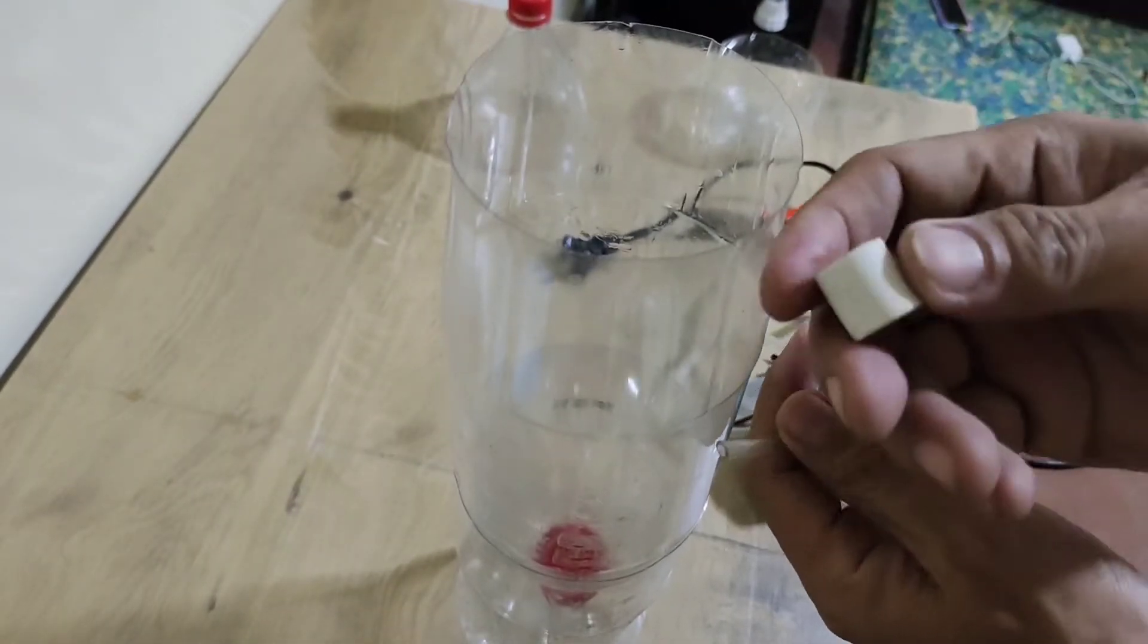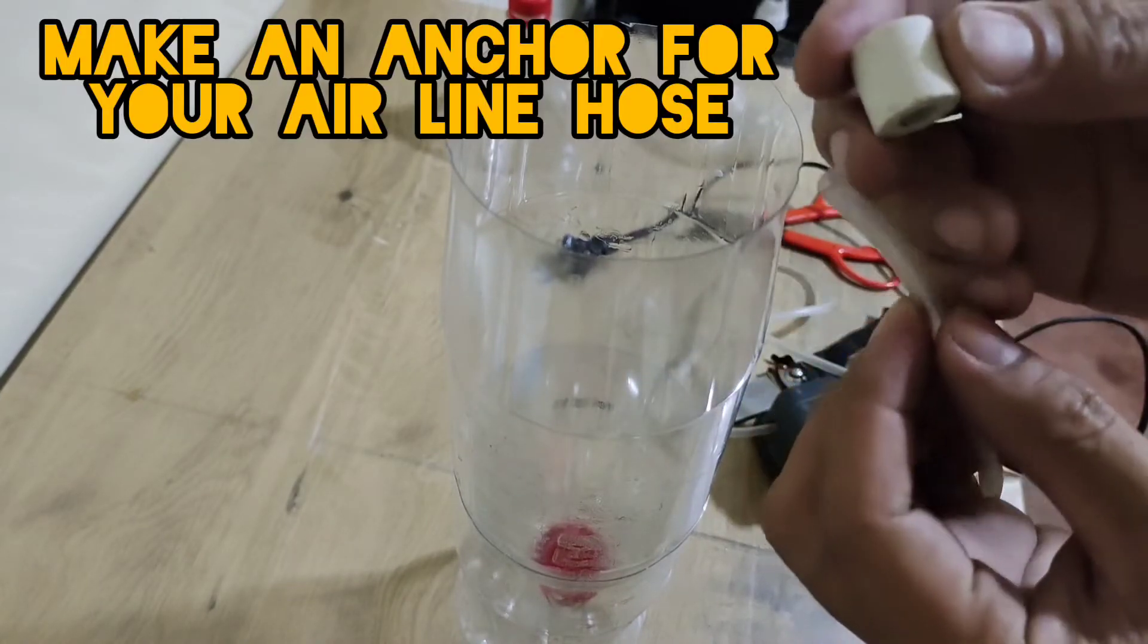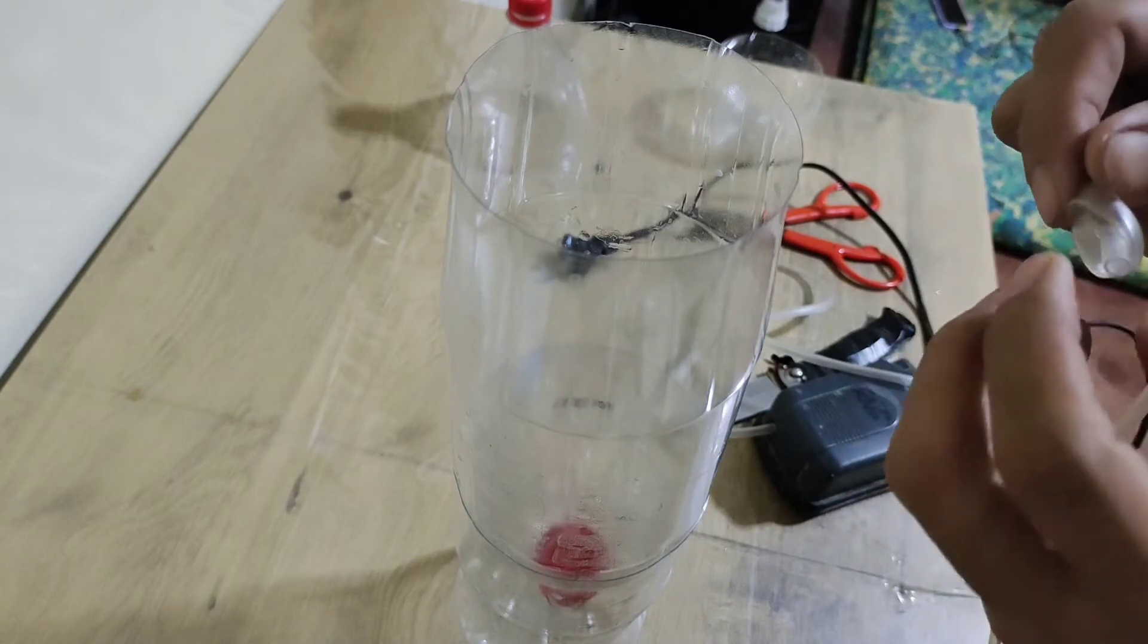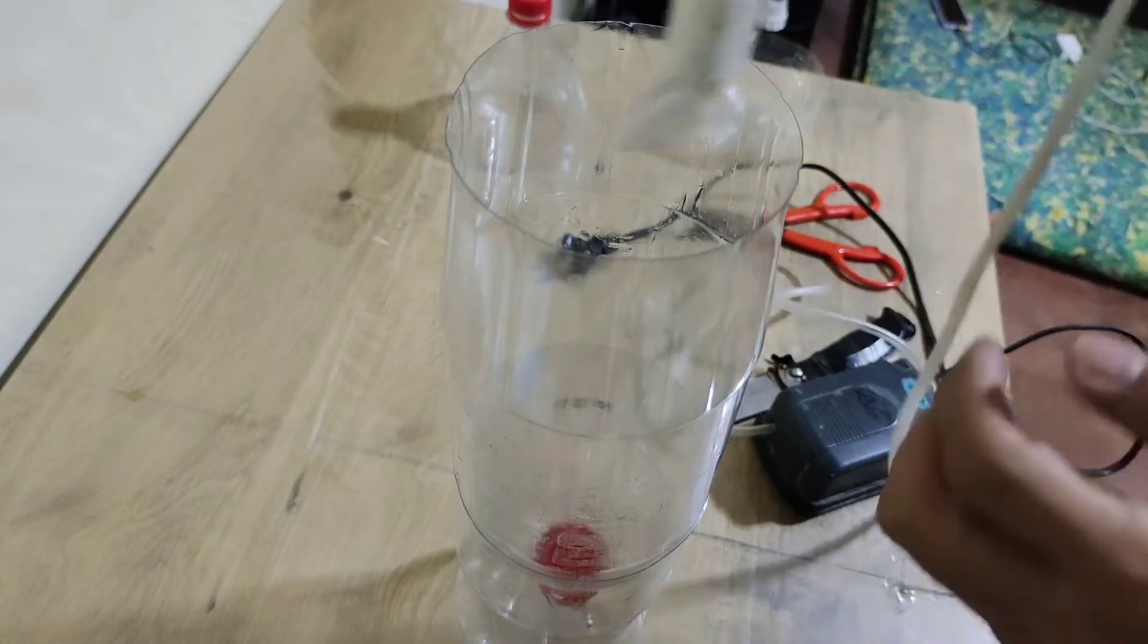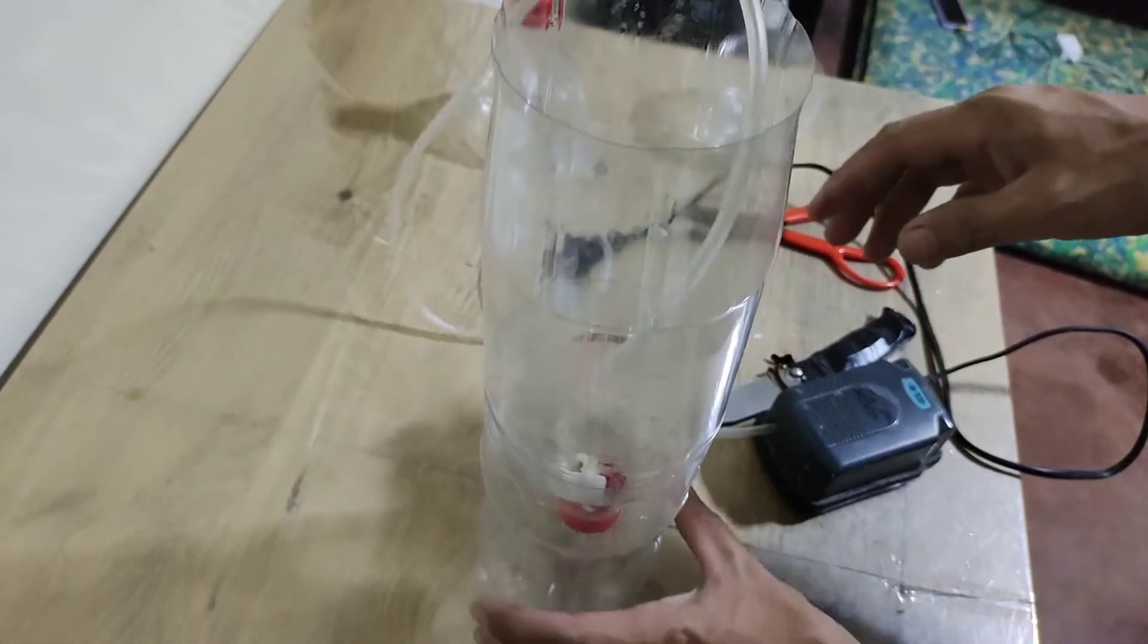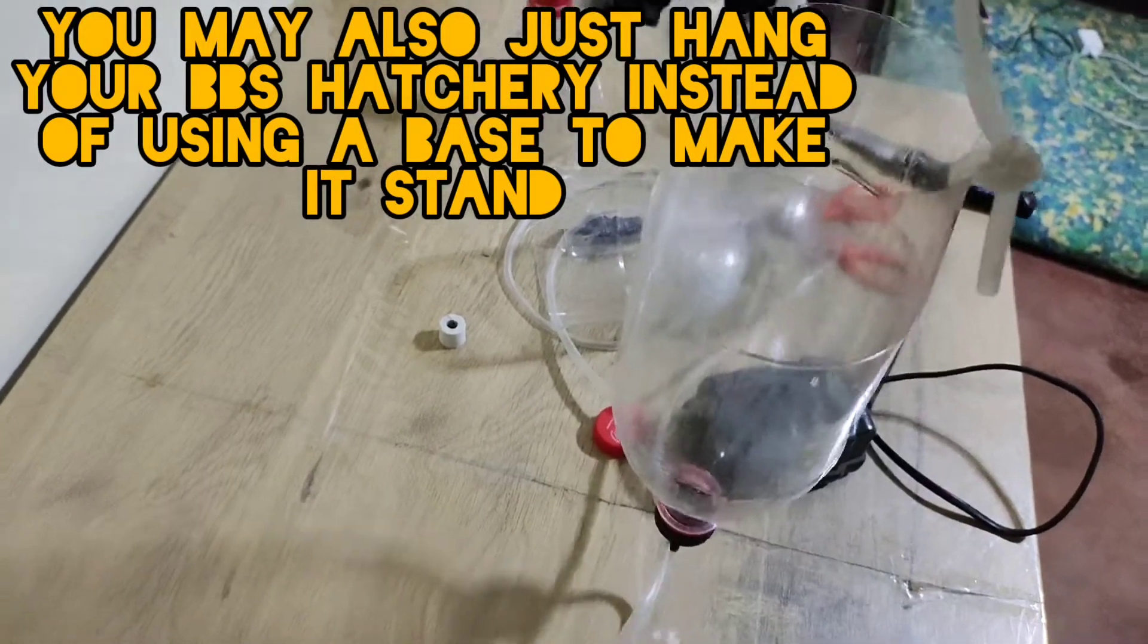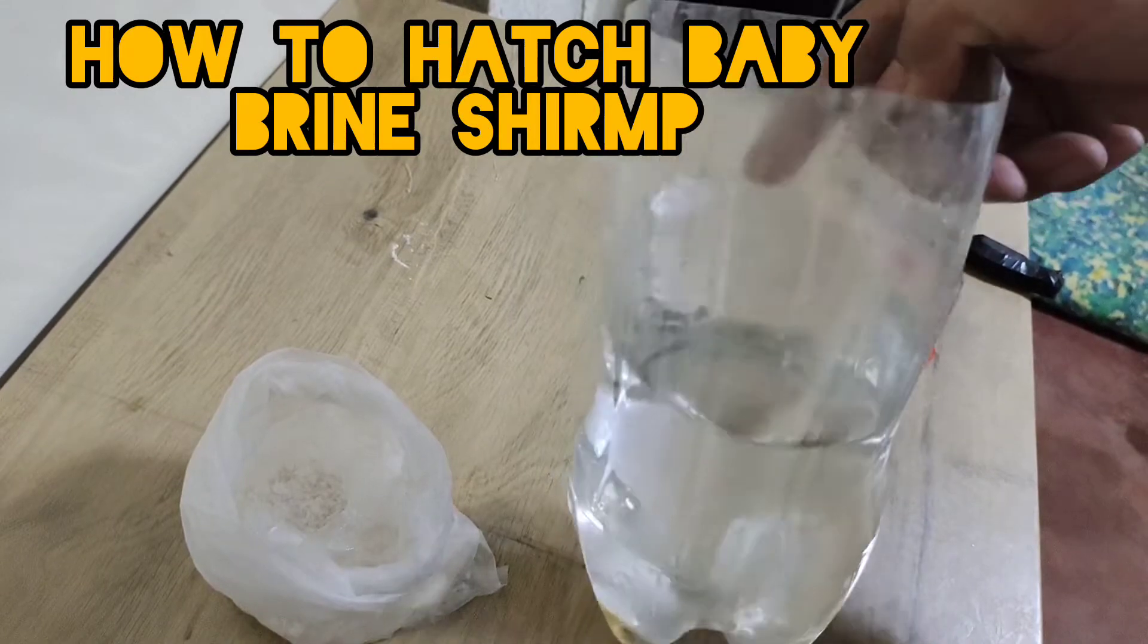Then use this stone, an air stone, to anchor your airline hose. Just make a knot at its end and place it inside the hatchery. So that would work also. Some people prefer to just hang their hatchery like this one instead of using a base.